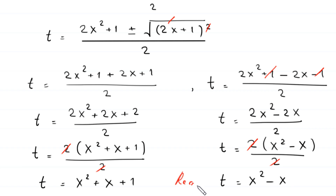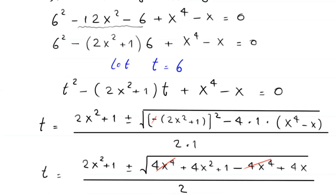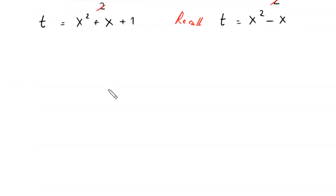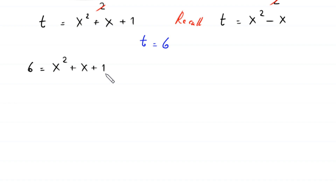Recalling that t equals 6, the first case gives 6 equals x squared plus x plus 1. Subtracting 6 from both sides, this becomes x squared plus x minus 5 equals 0.